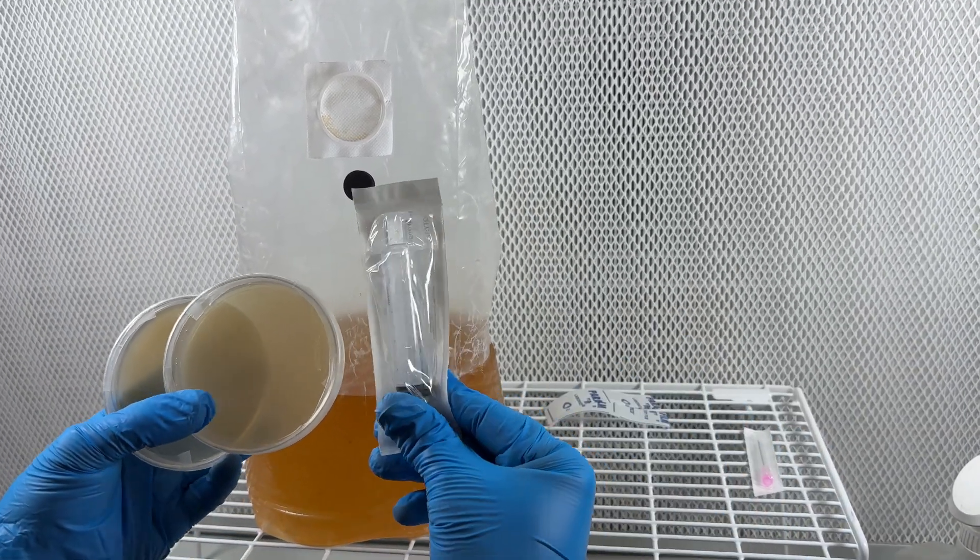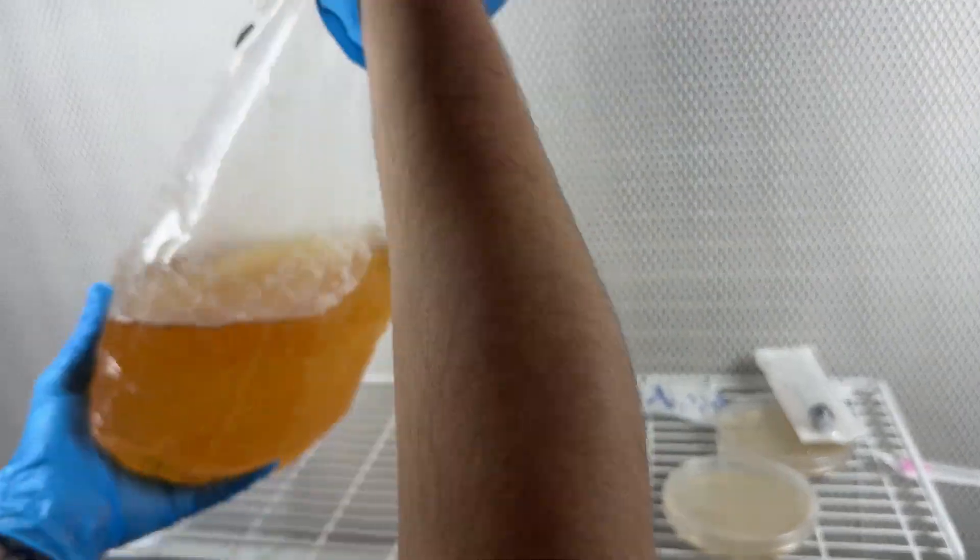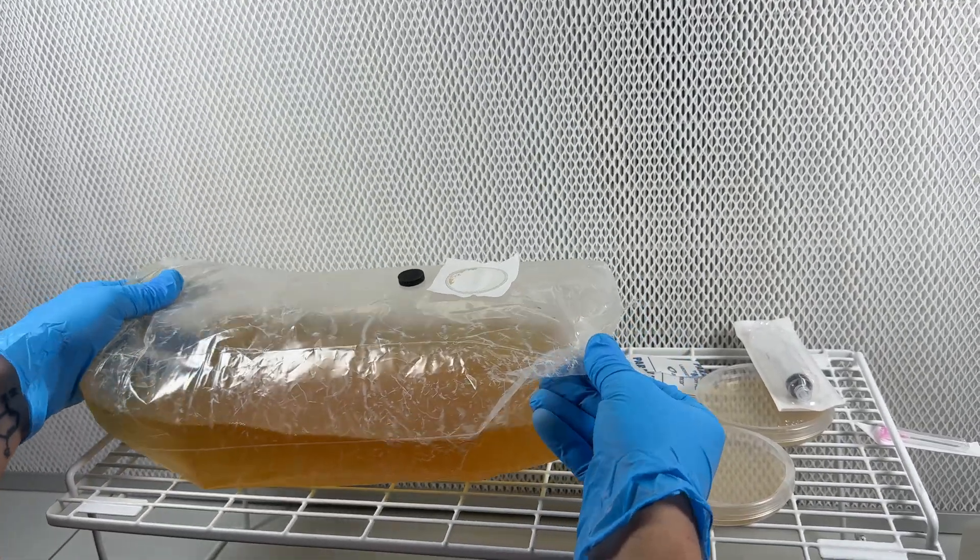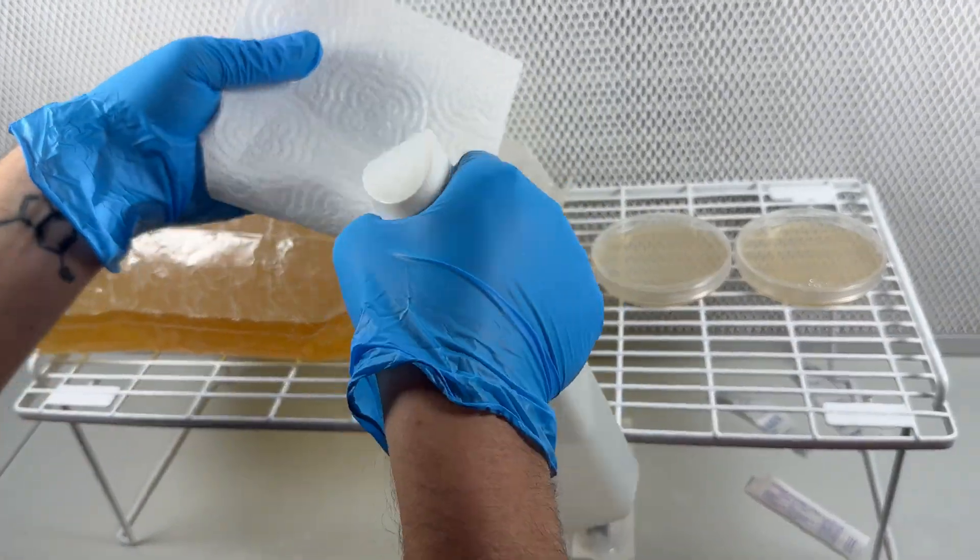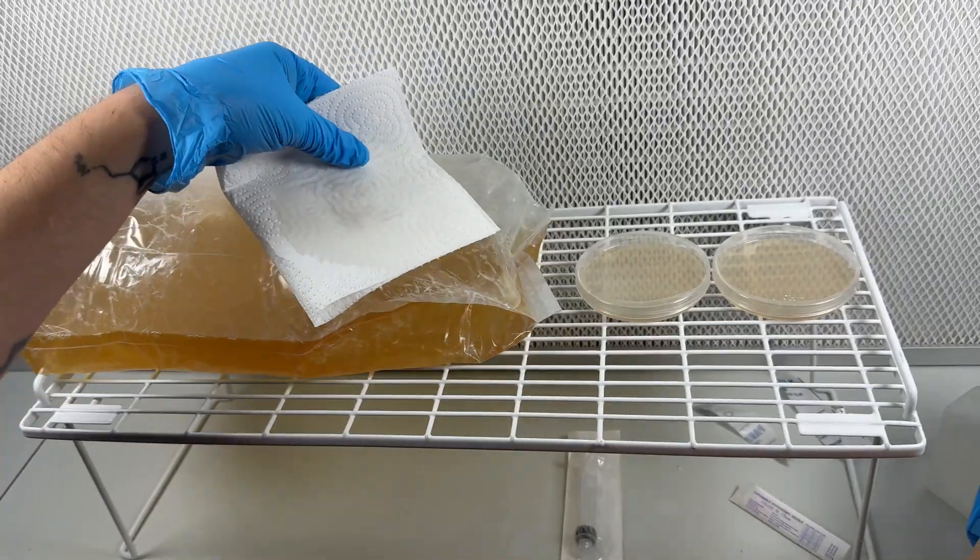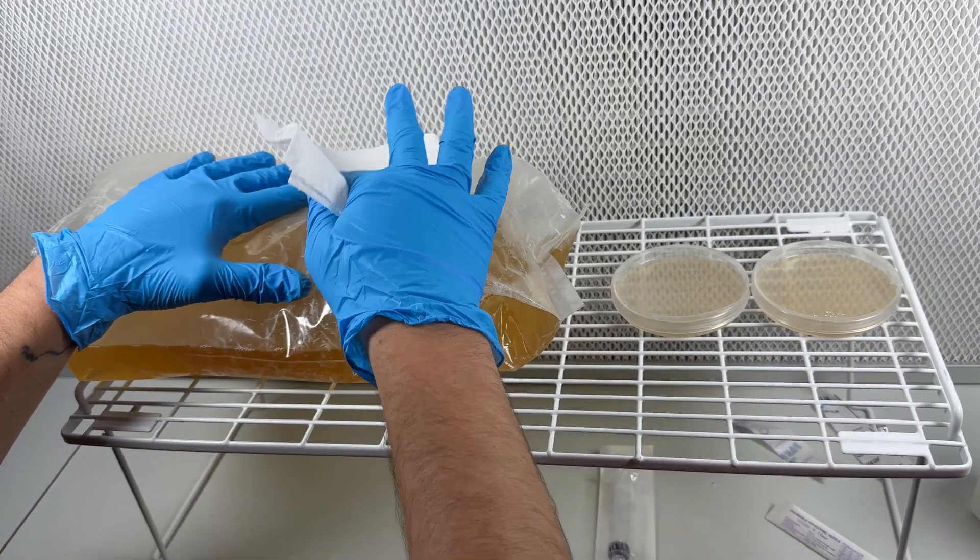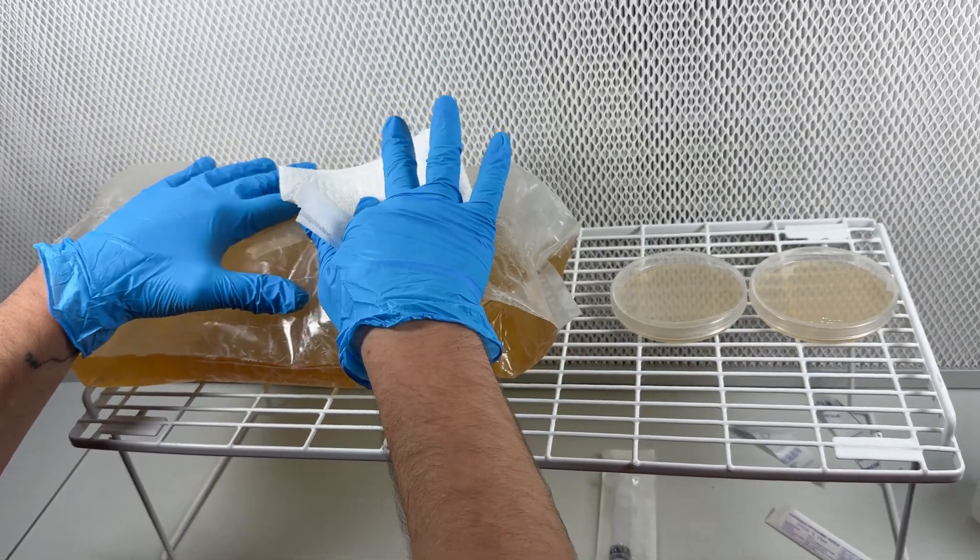Now that the bioreactor bag has grown enough mycelium, I had to test the liquid and make sure that it's not contaminated. I wipe the injection port down with isopropyl alcohol and then I use an empty sterile syringe and needle to extract a little bit of the liquid from the bag.